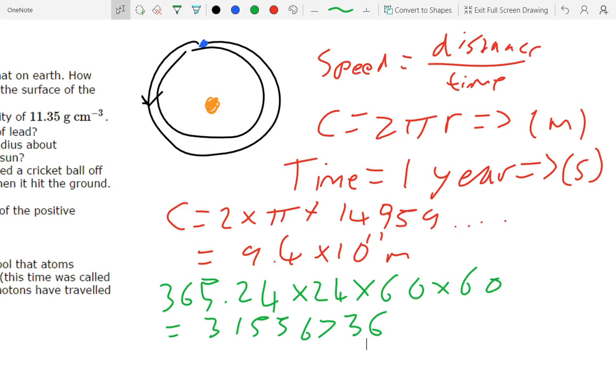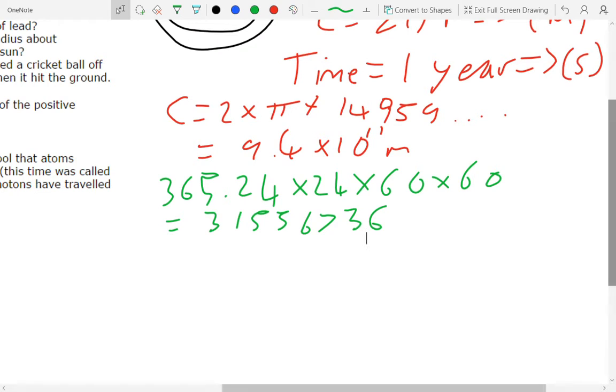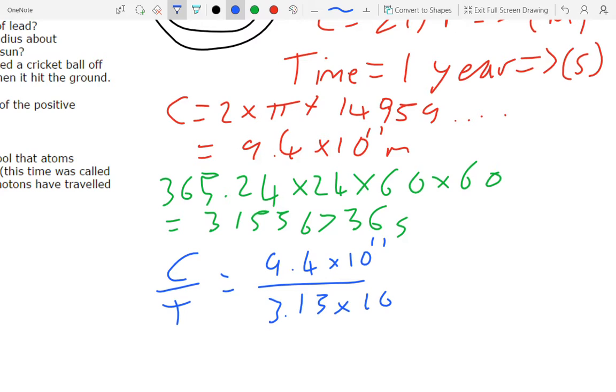And we can just work out the velocity by doing this term here, the 9.4 times 10 to the 11 over this value here, which I should have seconds written by it because that's just distance over time. And that gets us, if we do C, so the circumference over time, that's just distance over time: 9.4 times 10 to the 11 over 3.15 times 10 to the 7.